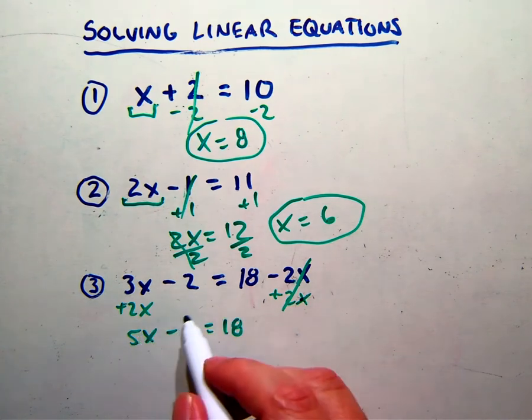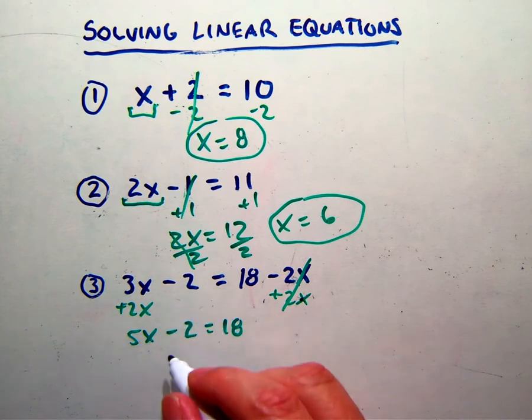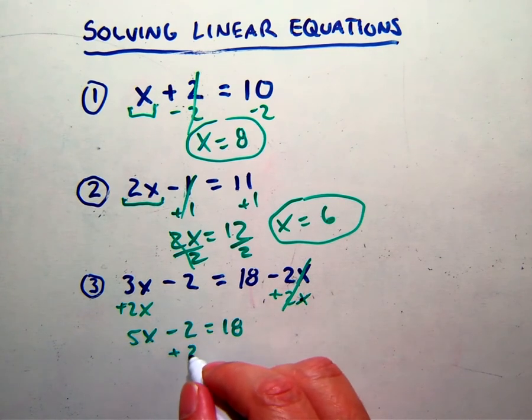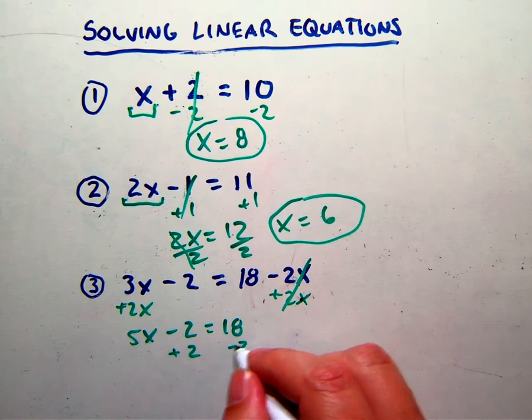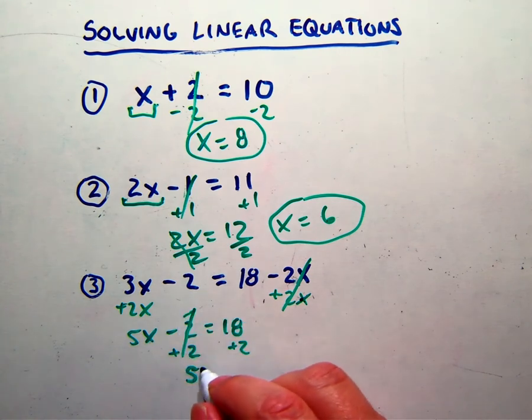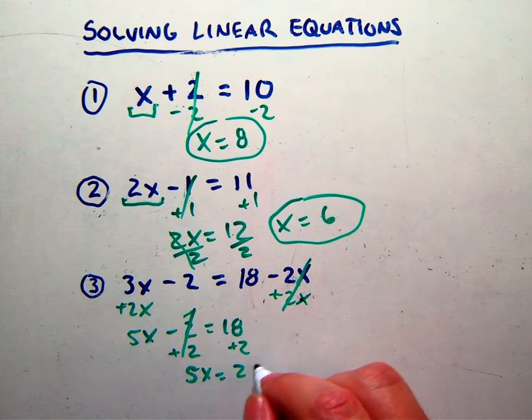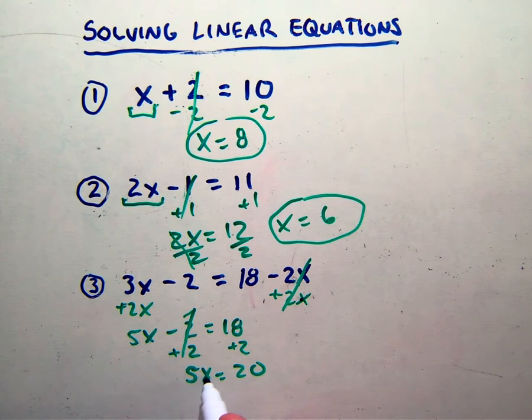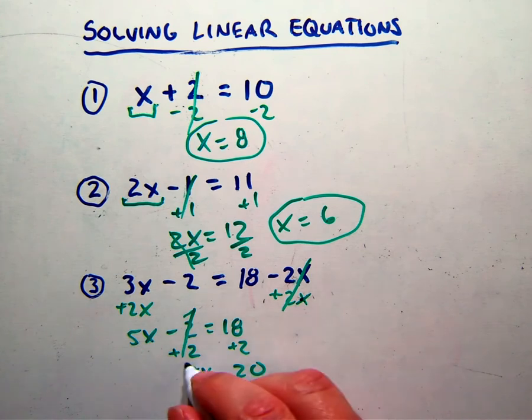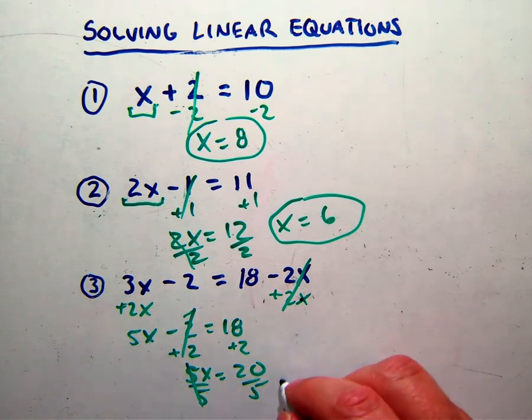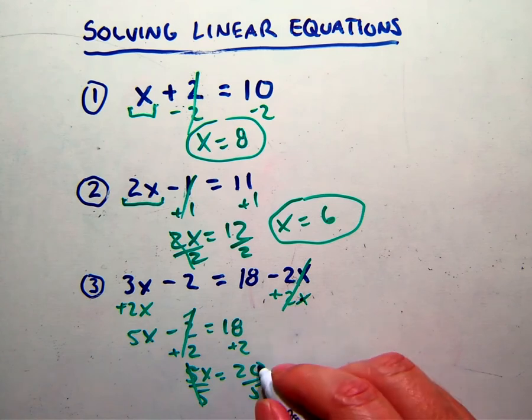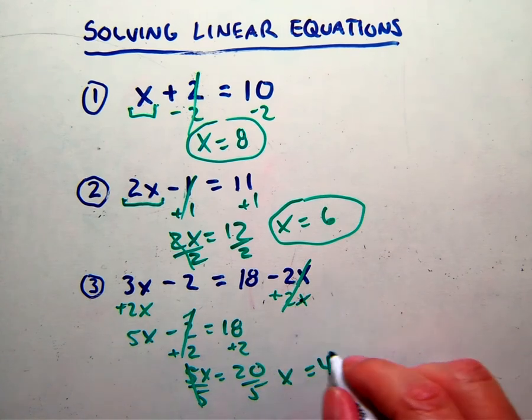Now, since we brought the x to this side, we want to bring the constant to the other side. So add 2 to both sides, and you're left with 5x equals 20. Now that our x term is alone, we can get the x alone. It's being multiplied by 5, so we divide by 5. And we are left with x equals 20 divided by 5, which is 4.